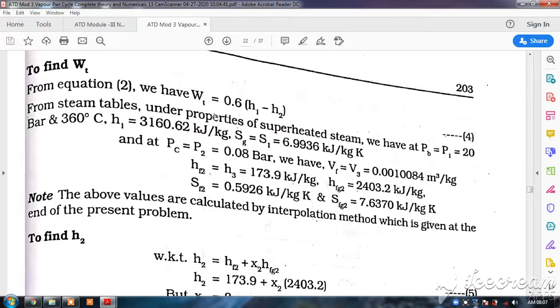After that, you have got this, and from there at 20 bar and 360 degrees you will get the value of enthalpy H1 and S1. So S1 is nothing but Sg, that is 6.9936 kilojoules per kg Kelvin directly.